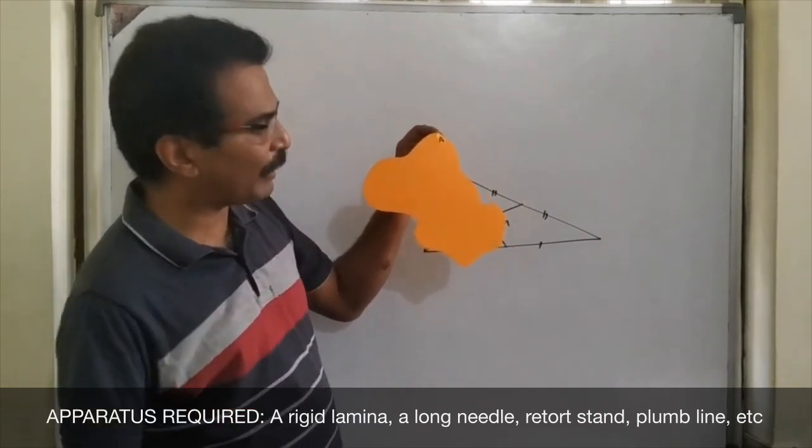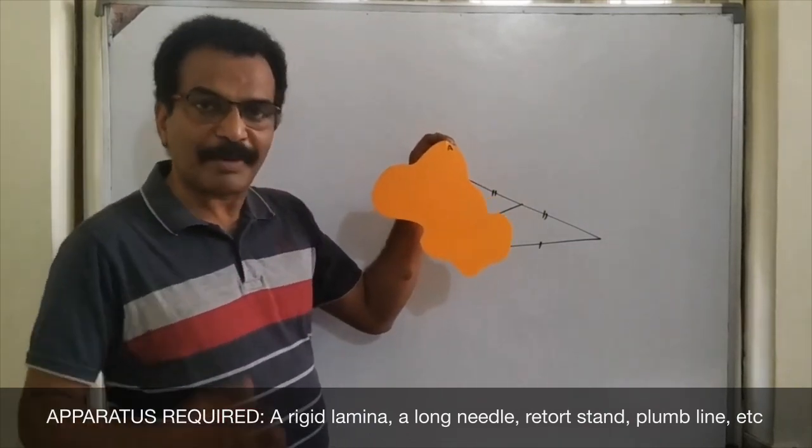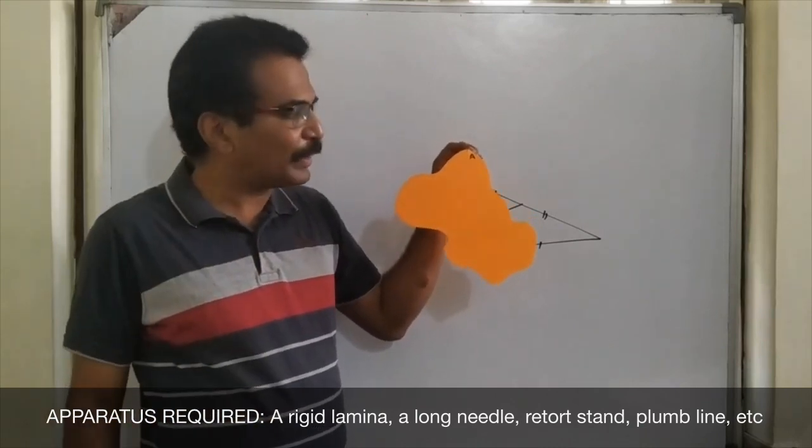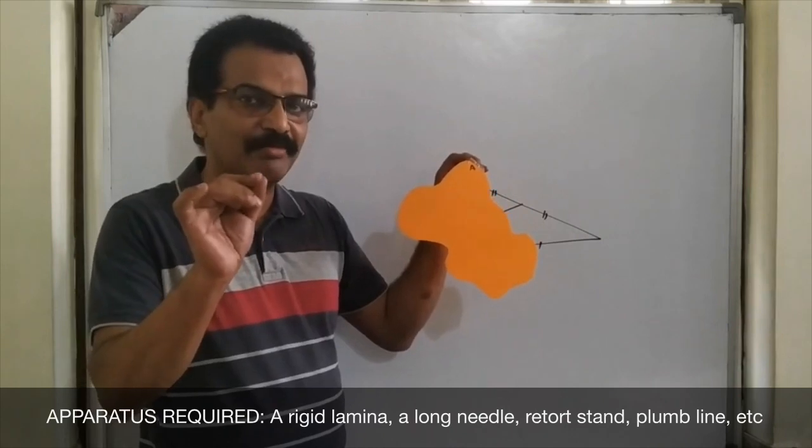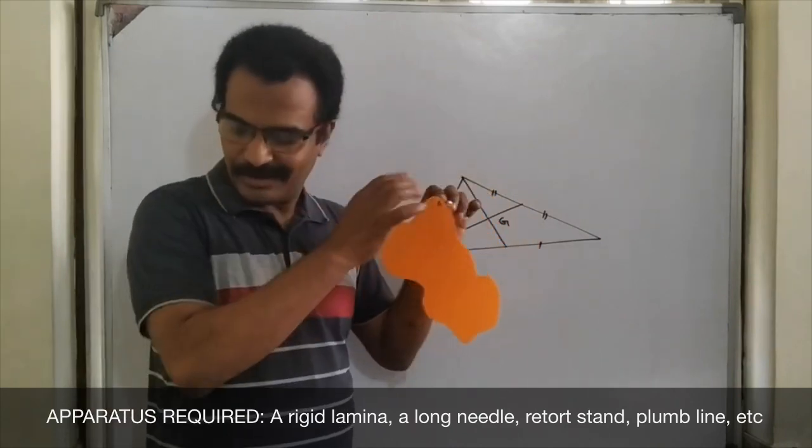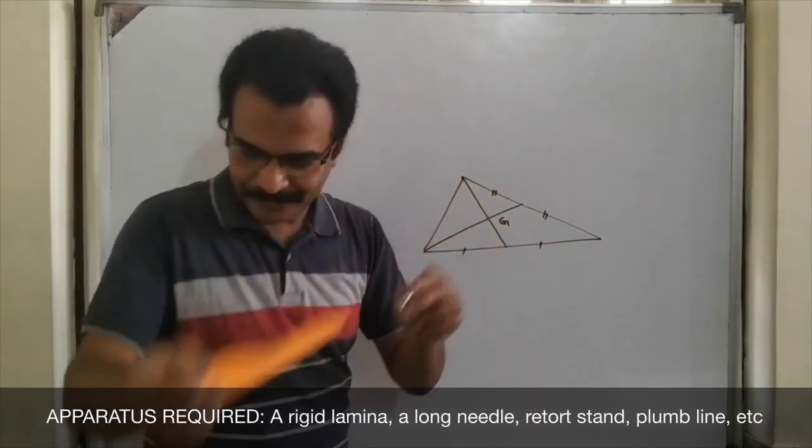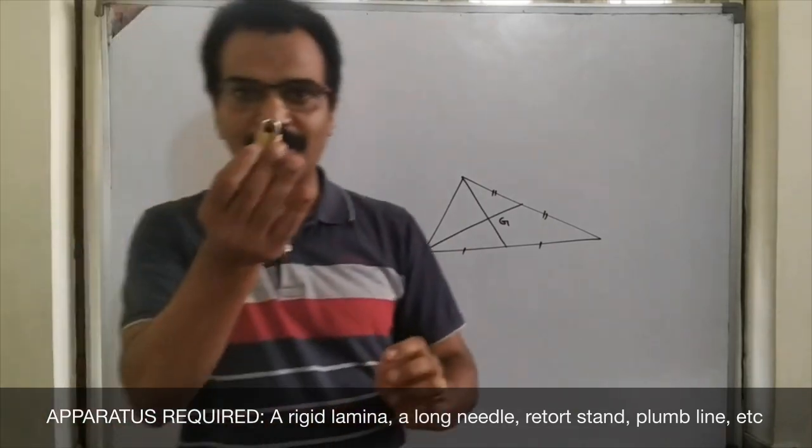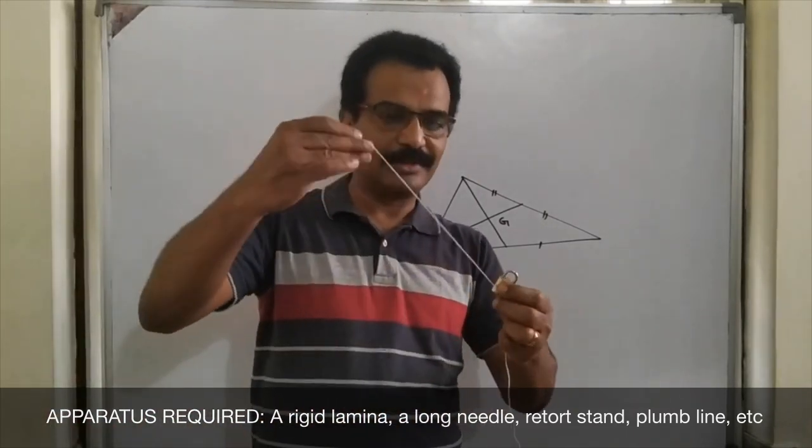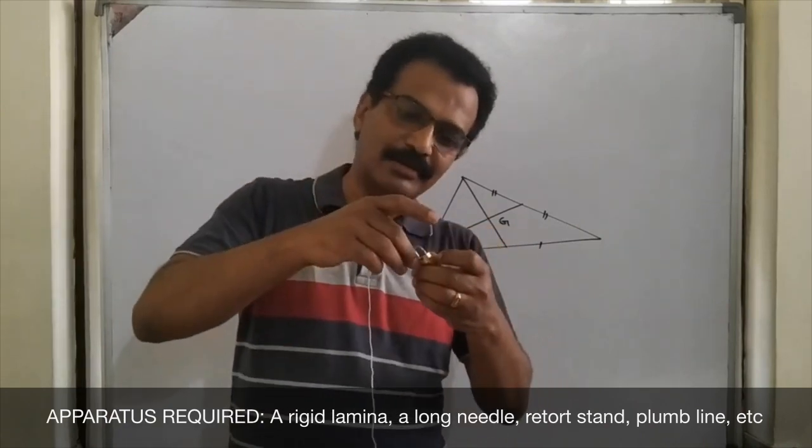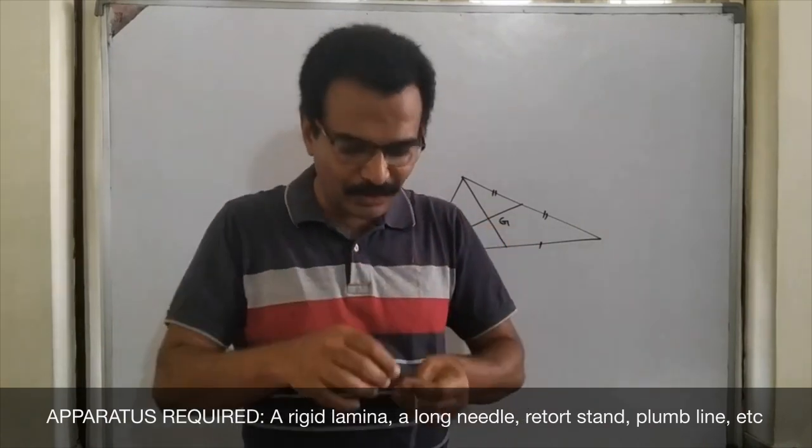Now, what I need is a plumb line. Plumb line may not be available right now. So, we will make it with the help of a lock. Yes. I have got a lock with me, a small lock. And you take a thread. Tie the lock.